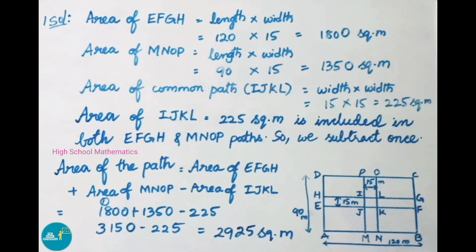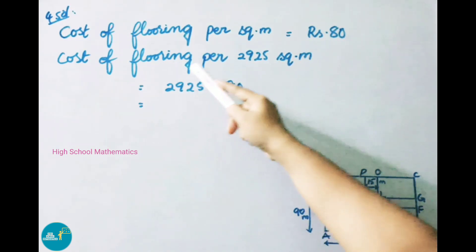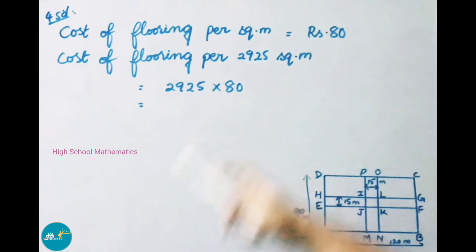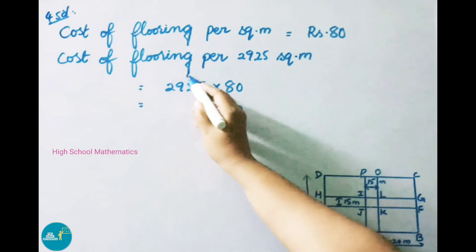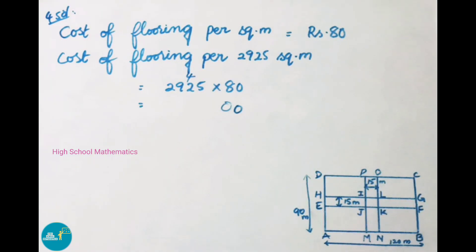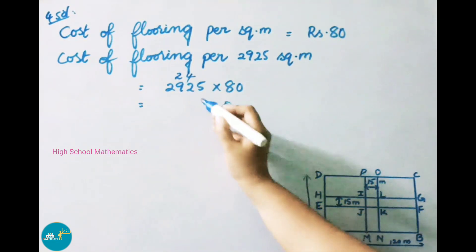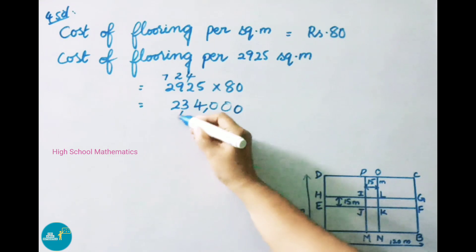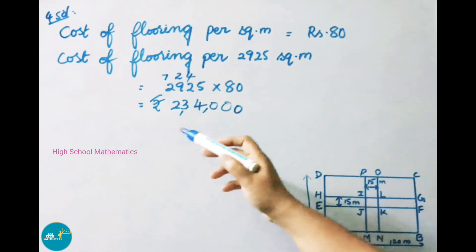Now we have to find the cost of flooring. The cost of flooring per square meter is 80 rupees. Cost of flooring for 2925 square meters is 2925 into 80. Calculating: 8 fives are 40, write 0 carry 4; 8 twos are 16 plus 4 is 20, write 0 carry 2; 8 nines are 72 plus 2 is 74, write 4 carry 7; 8 twos are 16 plus 7 is 23. Therefore the cost of flooring for 2925 square meters is Rs. 234,000.